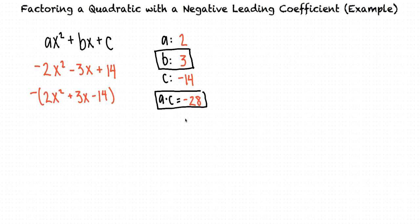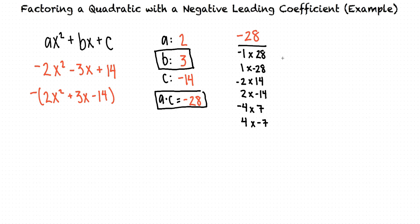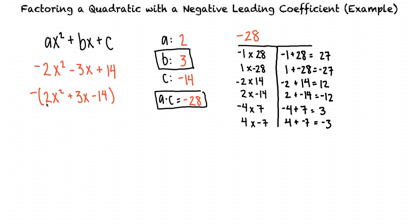So now we need to figure out what factors multiply to negative 28 and add to 3. Let's start by making a table with pairs of factors of negative 28 — these are all numbers that multiply to negative 28. We need to figure out which pair also adds to 3. Negative 4 and 7 multiply to negative 28, and they also add up to 3, so this is the pair we want to use for the next step.